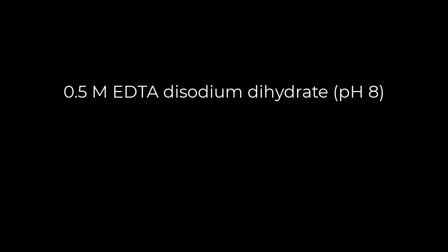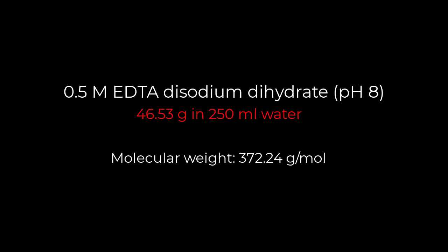Let us first prepare 0.5 molar EDTA solution. The molecular weight of EDTA disodium dihydrate is 372.24 grams per mole, meaning if you dissolve 372.24 grams of this EDTA powder in 1 liter of water, you will get 1 liter of 1 molar EDTA. So 46.53 grams of this EDTA powder in 250 ml of water will give us 0.5 molar EDTA.